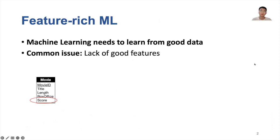Successful machine learning needs to learn from good data. However, one common issue about training data for machine learning practitioners is the lack of good features. To mitigate this problem, feature augmentation is often employed by enriching features from multiple tables, so as to become feature-rich machine learning.